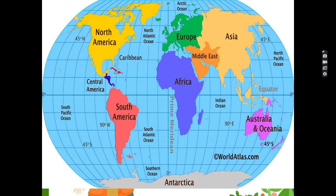Here you can see this is our earth. We have already learned about the land masses and they are the continents of the world. North Pacific Ocean is between Asia and America. Indian Ocean is just before Asia and in between Africa and Australia. Arctic Ocean is just above Eurasia.